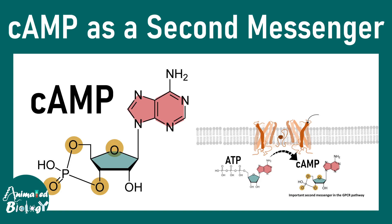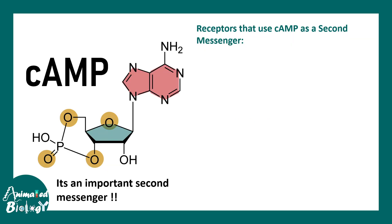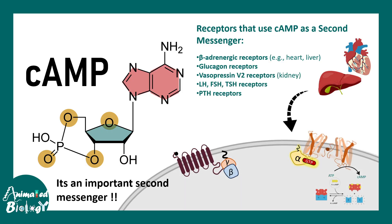In this video we'll talk about cyclic AMP as a second messenger — the middleman in different signaling pathways. One of the most important second messengers is cyclic AMP, which is literally involved in many pathways. For example, it is downstream to the beta adrenergic receptor, glucagon receptor, vasopressin receptor, LH, FSH, TSH receptor, parathyroid hormone receptor, and many more.